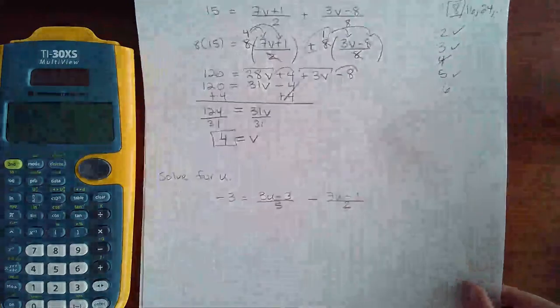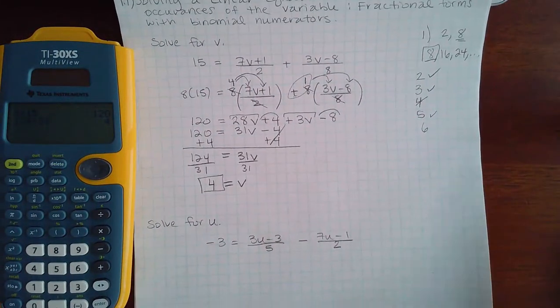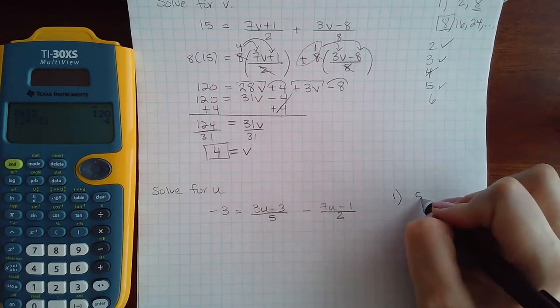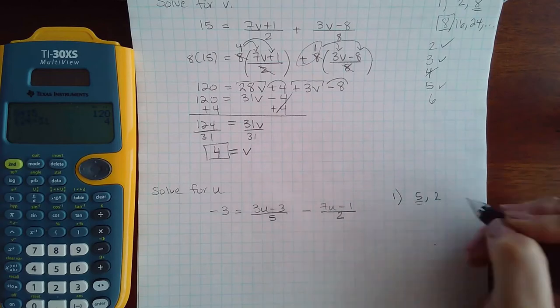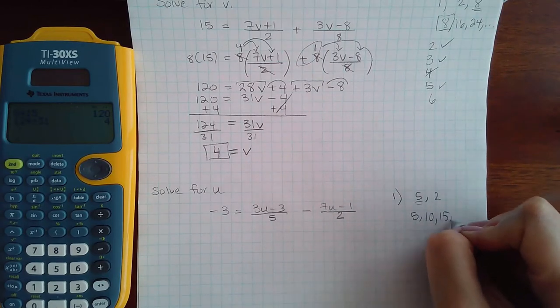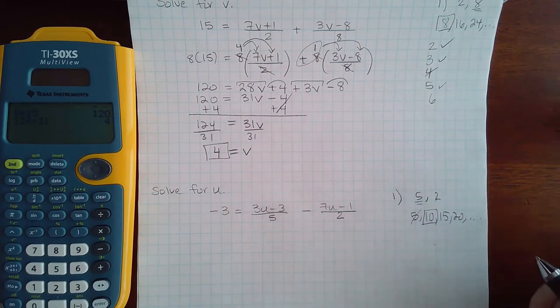Let's try that again with another one, especially because there's a bunch of negatives in this problem. So we're going to do the same thing. Identify that LCD. So my denominators are 5 and 2, the bigger number being 5. So if I list his multiples, 5, 10, 15, 20, so on and so forth, 2 does not go into 5, but 2 does go into 10.